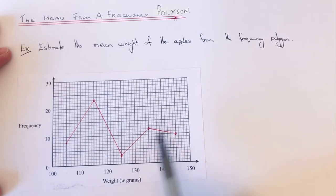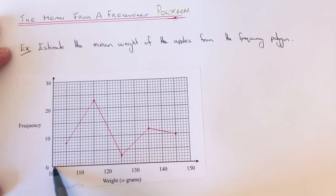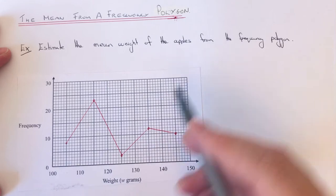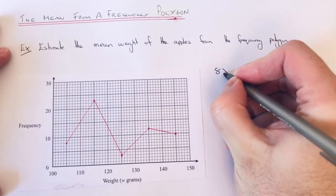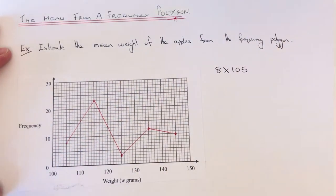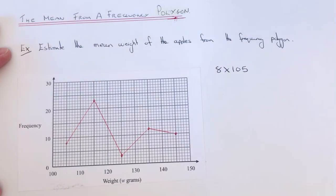In our first group between 100 and 110, we had 8 apples. So 8 times 105. We can work these out in a minute.